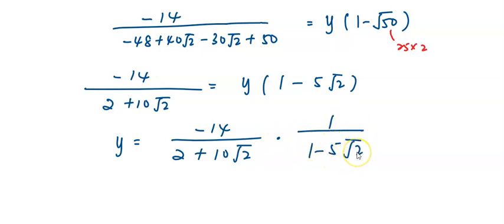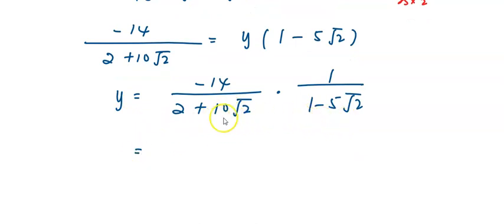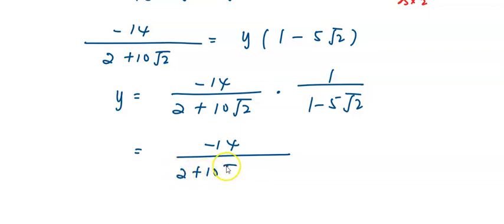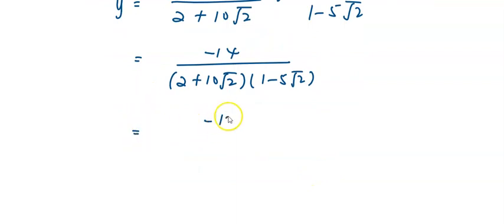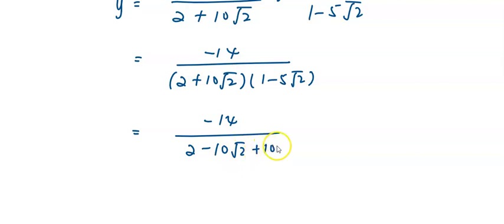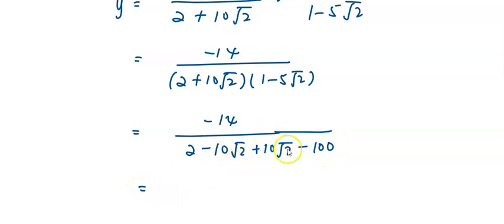Then I need to expand, multiply, and simplify to get the answer. On top I got negative 14, and then 2 plus 10√2 multiplied by 1 minus 5√2. Expanding: 2 minus 10√2 plus 10√2 minus 50. The two middle terms cancel each other. 5 multiplied by 2 gives 100, giving negative 100. So I get negative 14 divided by negative 98, which simplifies to 1 over 7.